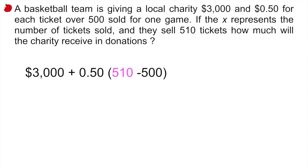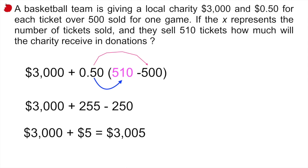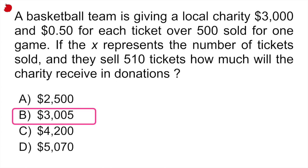And now what you do is you're going to go ahead and use that distributive property where you're going to multiply that 50 cents by 510 and also by 500. So if you do that, you end up with 255 minus 250, and that's $5 plus the $3,000 that they had already given you. So that's 3,005, which is option B.